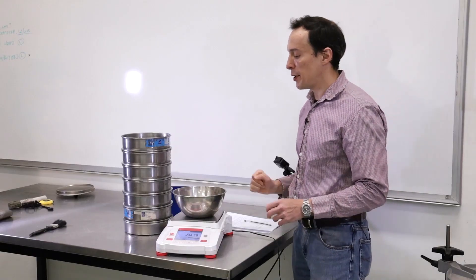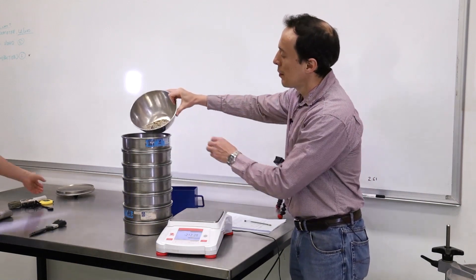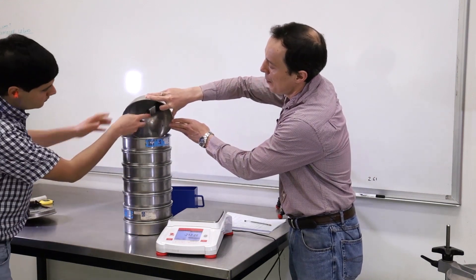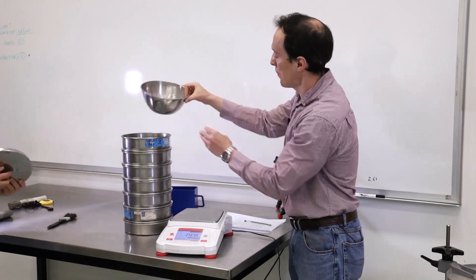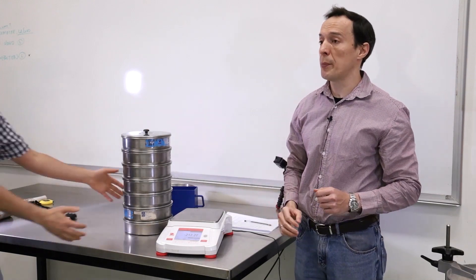So next step is we pour the sample in the sieves. We'll do it nice and gently. Make sure all the fines will go back in the soil where they belong. We're going to cover it with the lid and then we're going to put it in the shaker for 10 minutes.